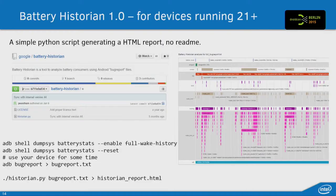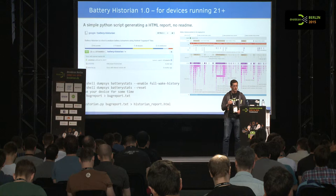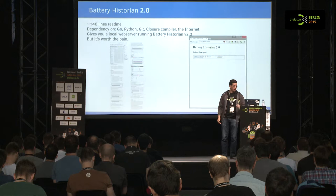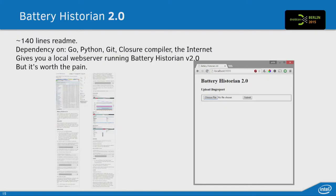To use Battery Historian, you just get a bug report from your device using ADB bug report. After you run your app on your device for some time — 30 minutes, one hour, three hours for us — to see how it interacts with the system. Then you run the Python script giving it your bug report, and it will generate an HTML report. And last week, because of Google I/O, there is a 2.0 version.